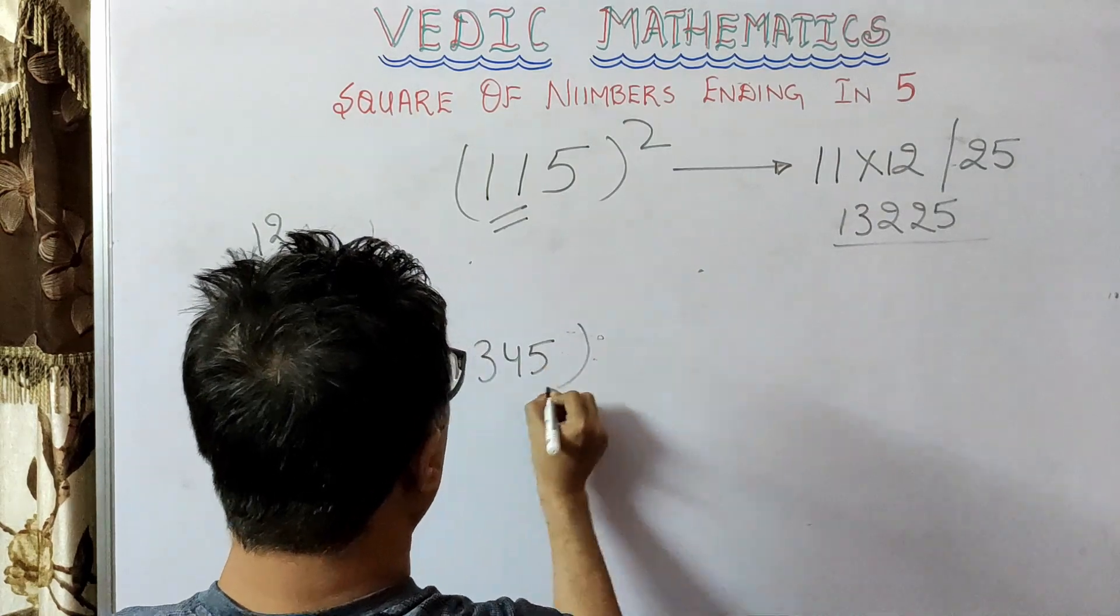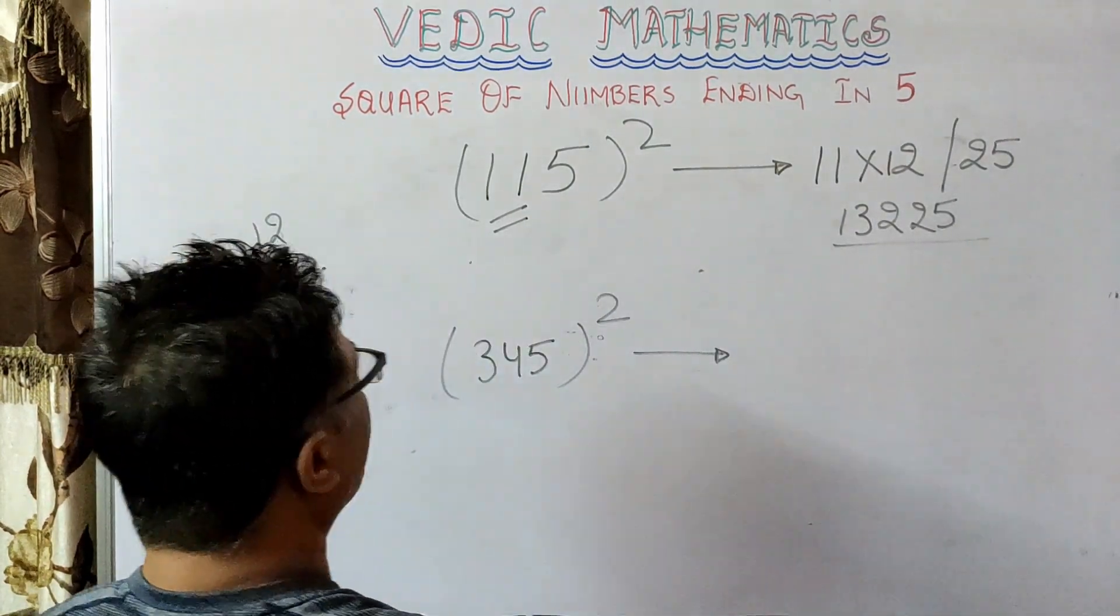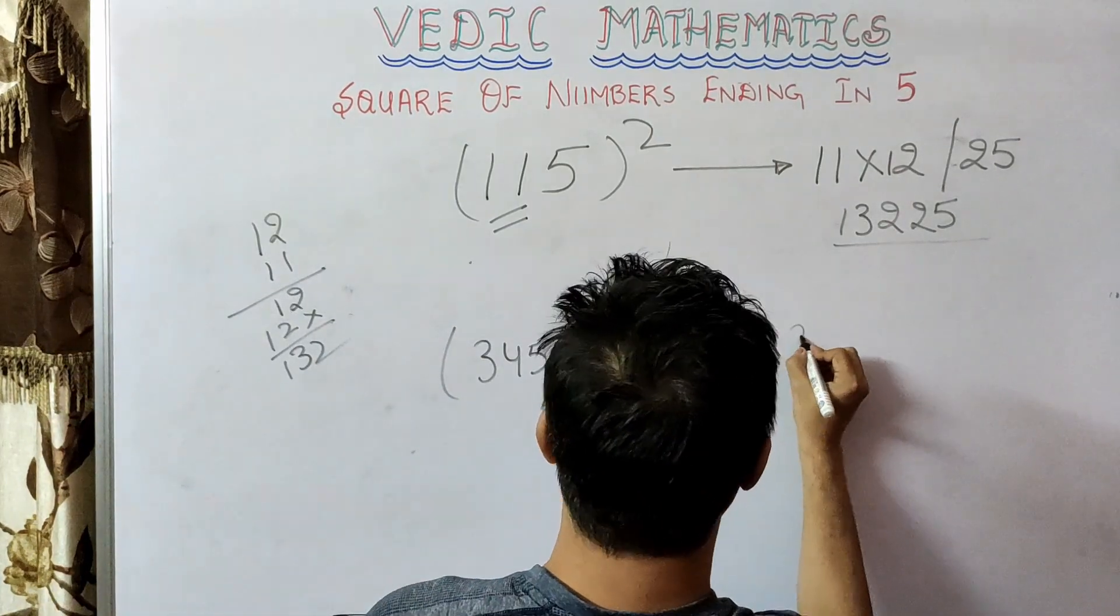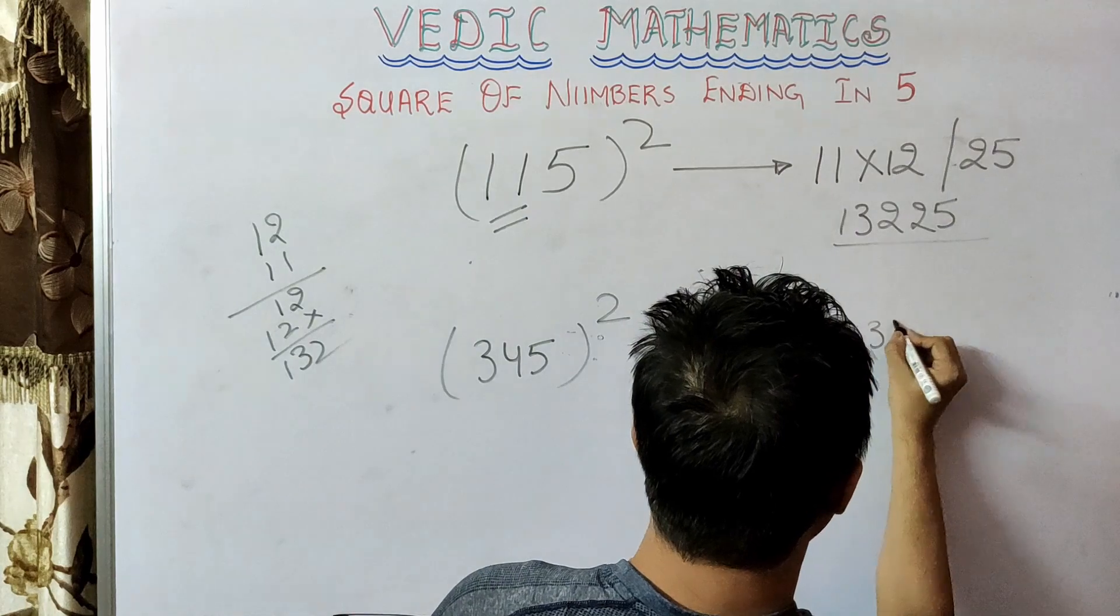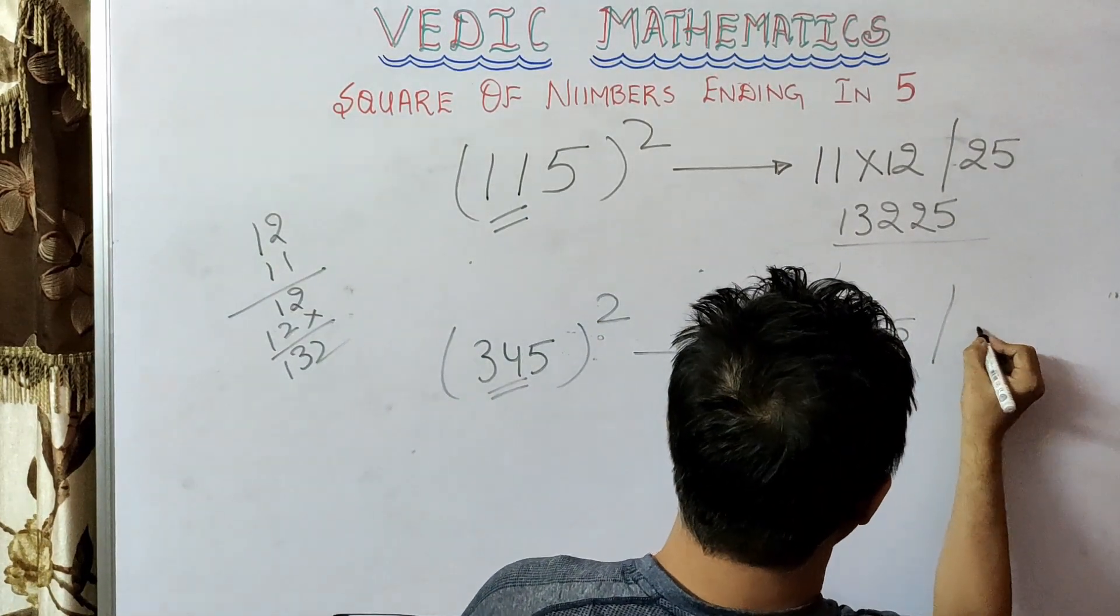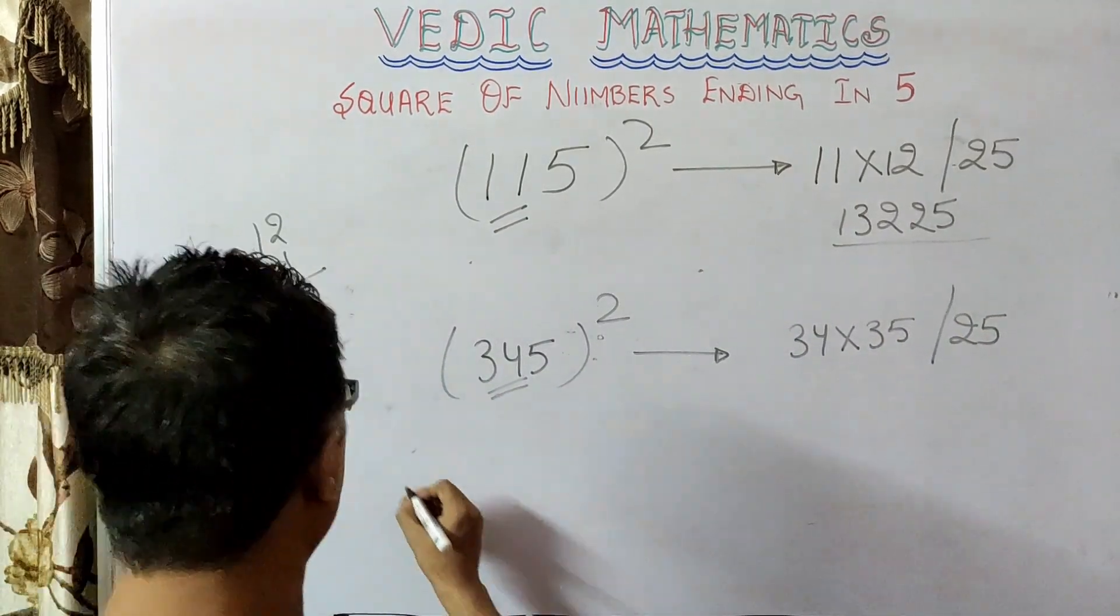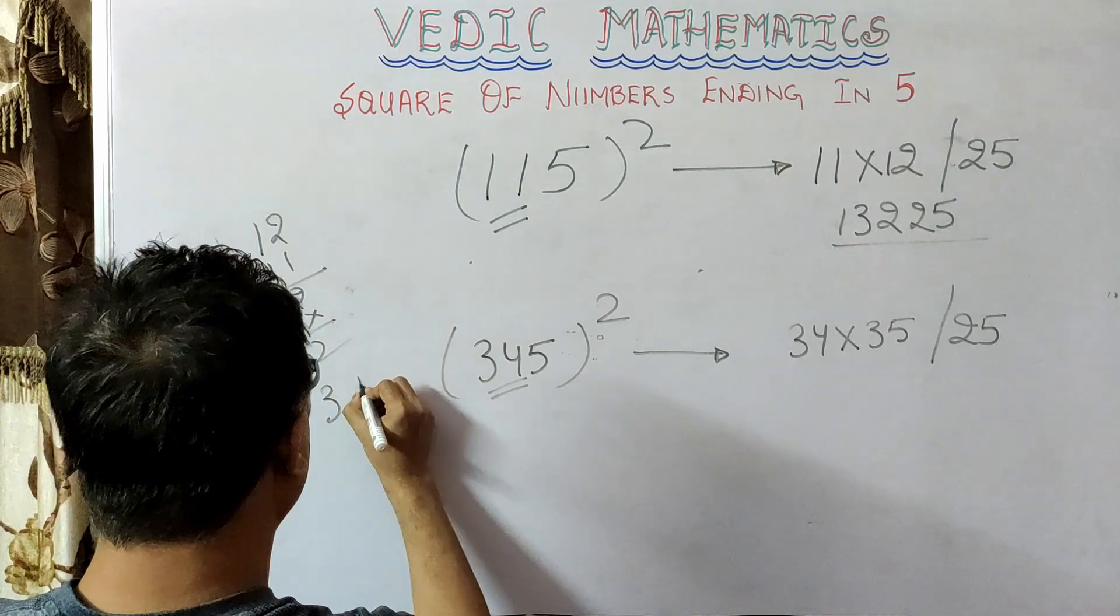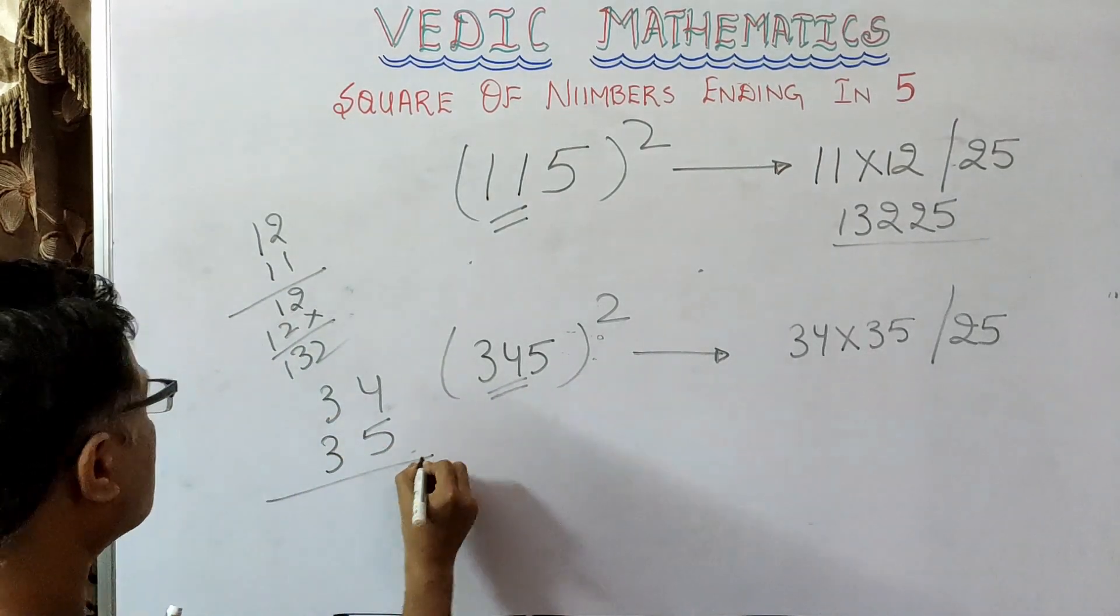Suppose you have to find 345 square. You do 34 multiplied by 35, because it is 34, and then you have 25. So now we will quickly calculate 34 multiplied by 35. So